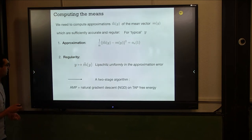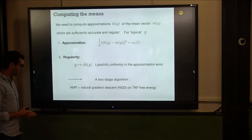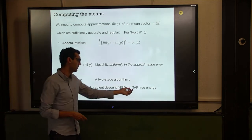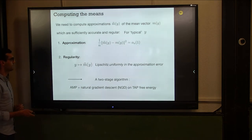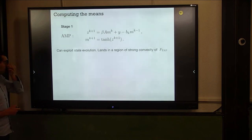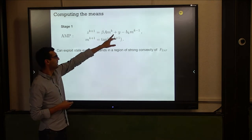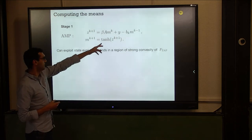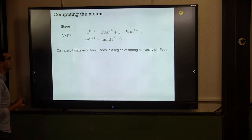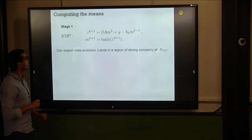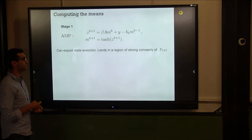The algorithm has a two-stage nature. The first stage is approximate message passing (AMP). The second is mirror descent on the TAP free energy. For AMP, you have two iterates, Z and M: Z is updated by taking the current M, multiplying by the disorder matrix, adding a field and subtracting an Onsager term, then the next M is the hyperbolic tangent of Z. You can exploit state evolution to prove many things about AMP.